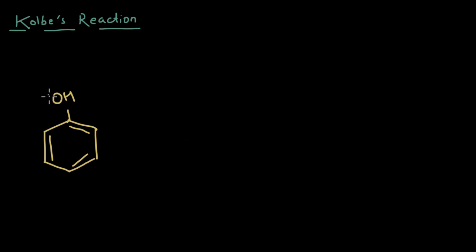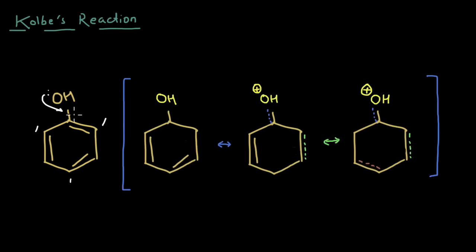The oxygen in phenol has lone pairs that it shares with the ring, because of which the electron density in the ring increases. Due to resonance, the electron density is higher at the ortho and para positions. If we break a double bond in the ring, there will be a negative charge on one carbon and a positive charge on another.